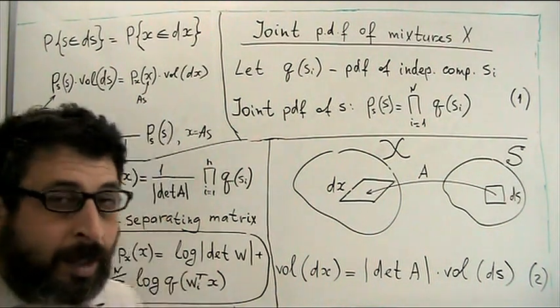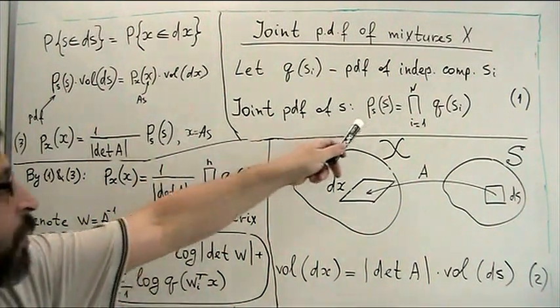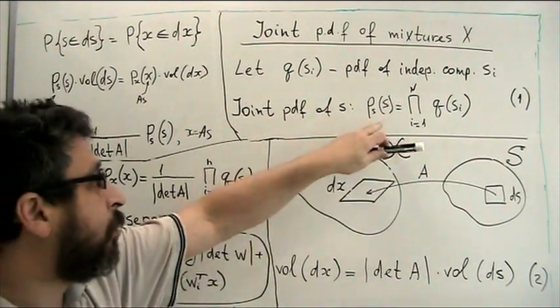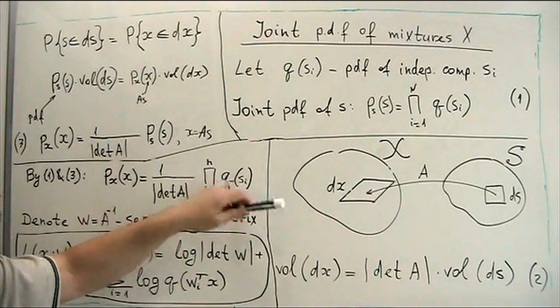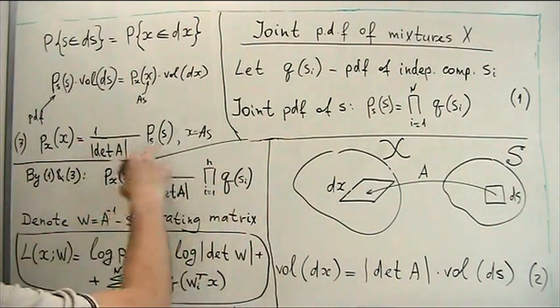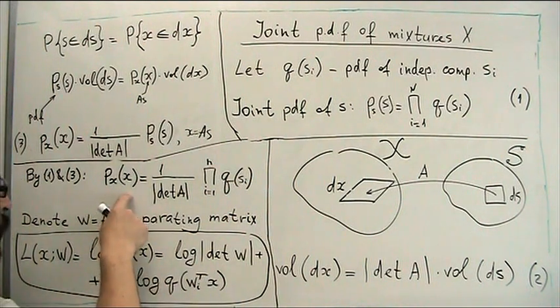Now, we remember an expression for probability of vector S and substitute those two formulas together. And this is our final expression for probability of mixtures.